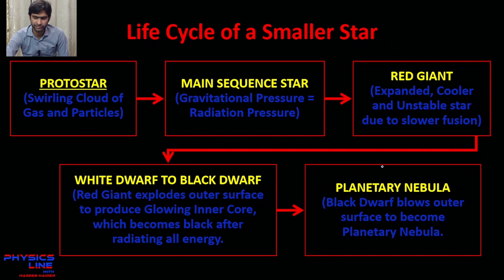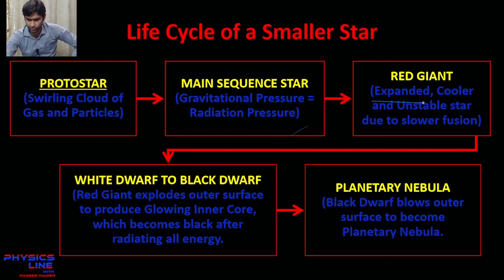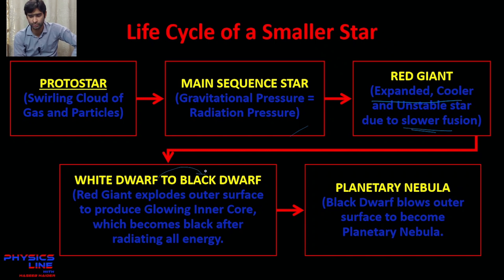When gravitational force takes effect again due to the heavier mass of the black dwarf, it further shrinks into what is called a planetary nebula. To summarize the life cycle of a smaller star: molecular cloud → protostar → main sequence star (when gravitational and radiation pressures balance) → red giant (due to hydrogen fuel deficiency) → white dwarf (outer core expelled) → black dwarf (residual energy emitted) → planetary nebula.